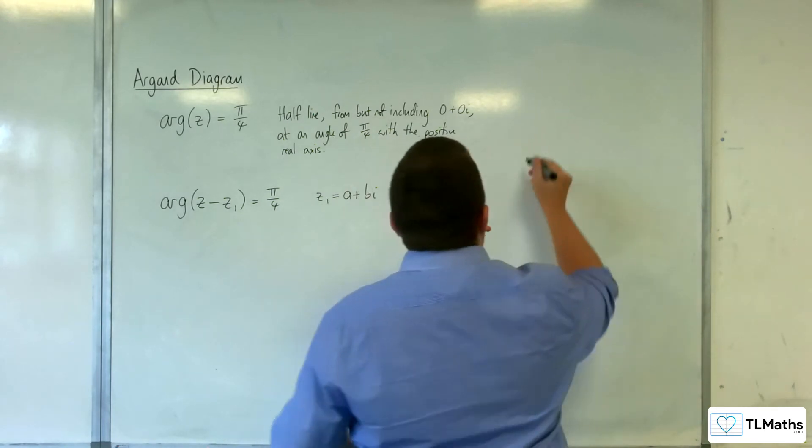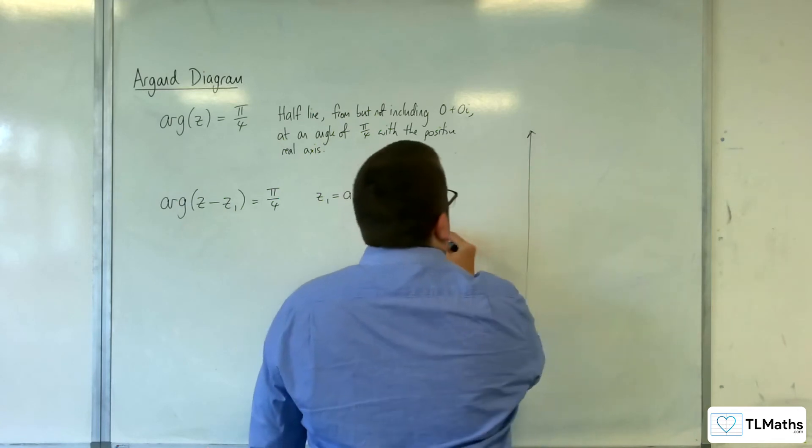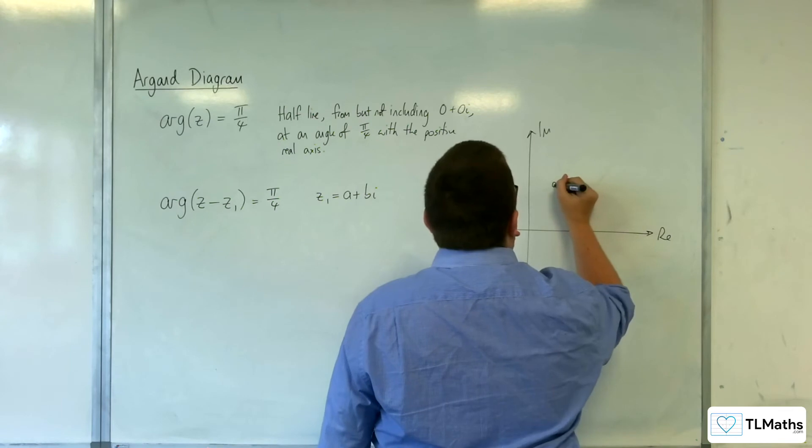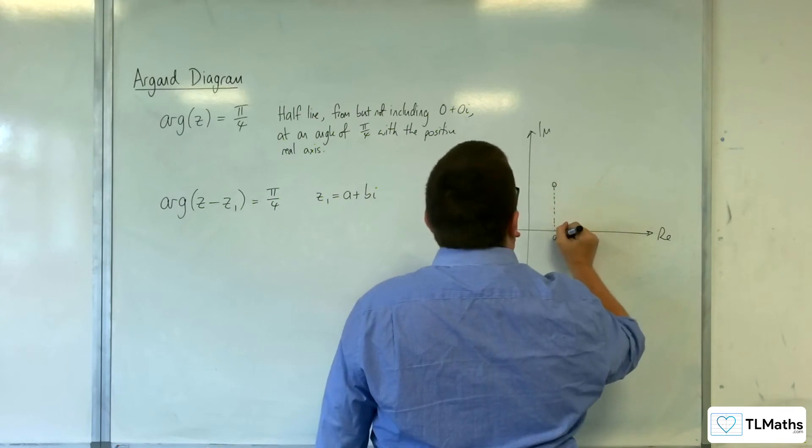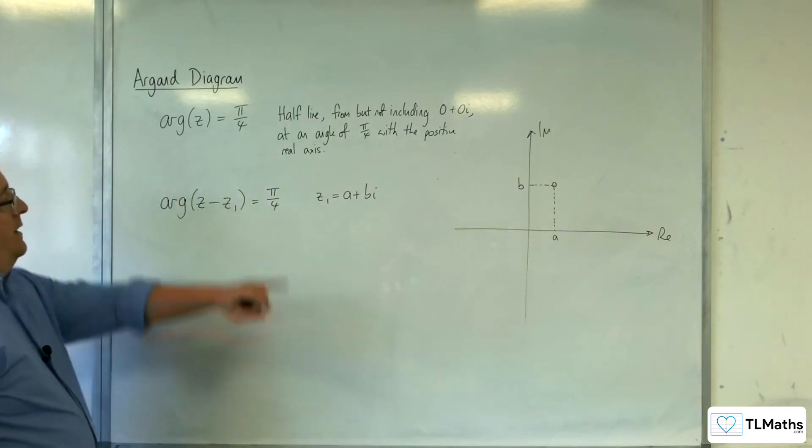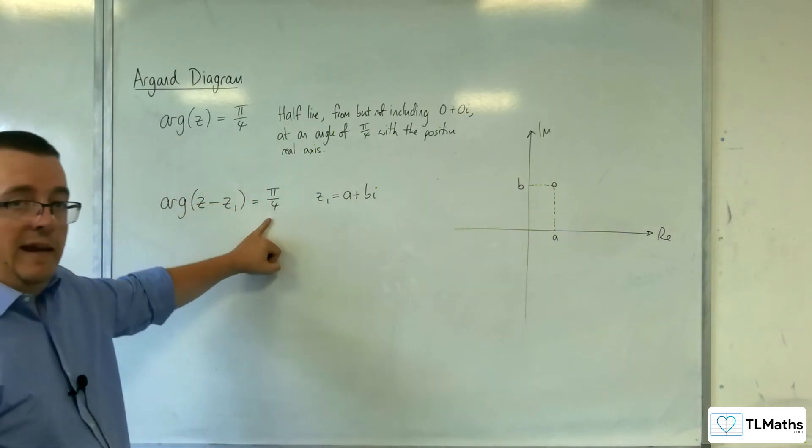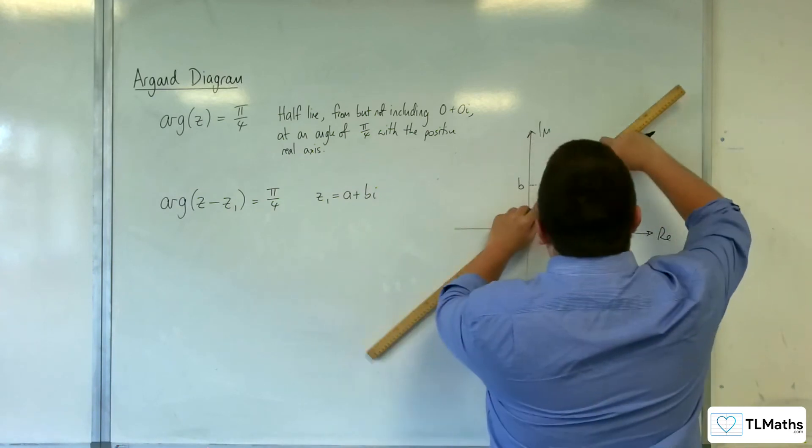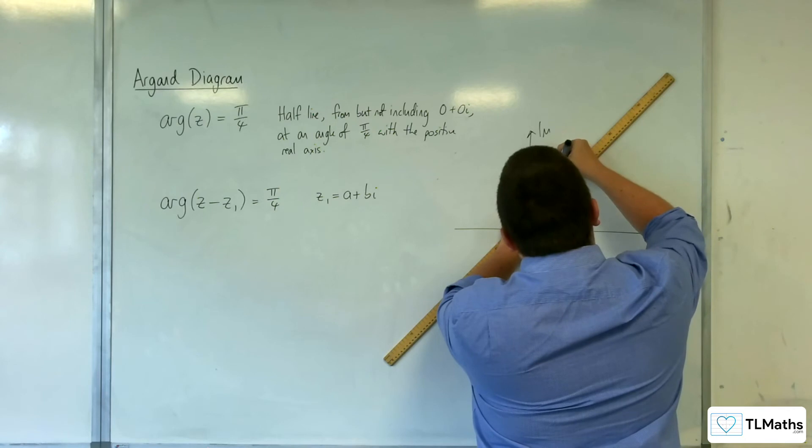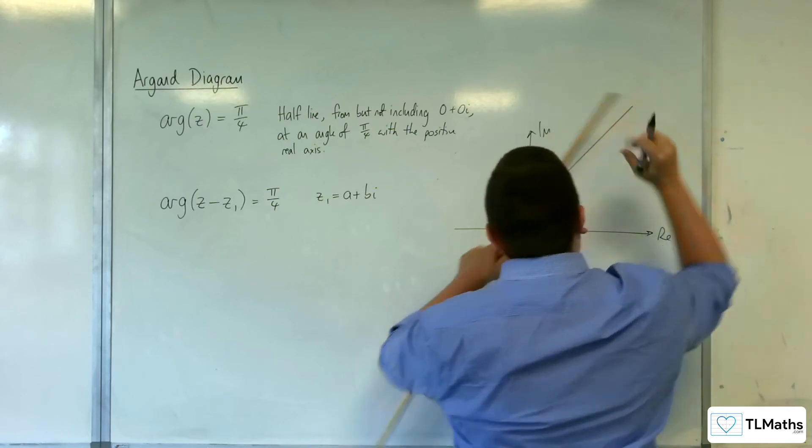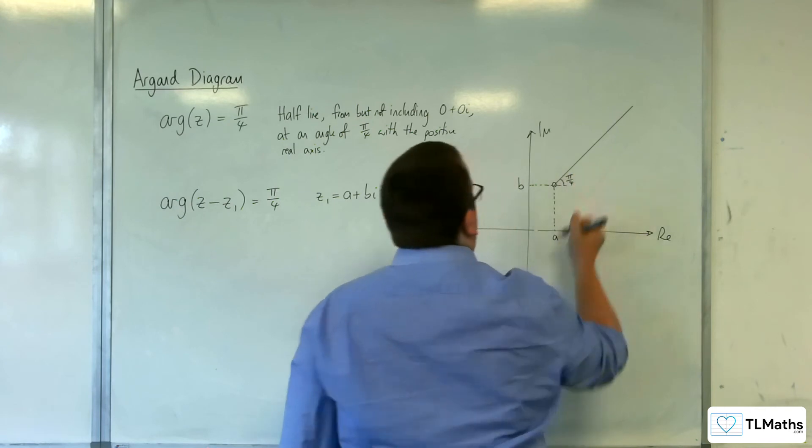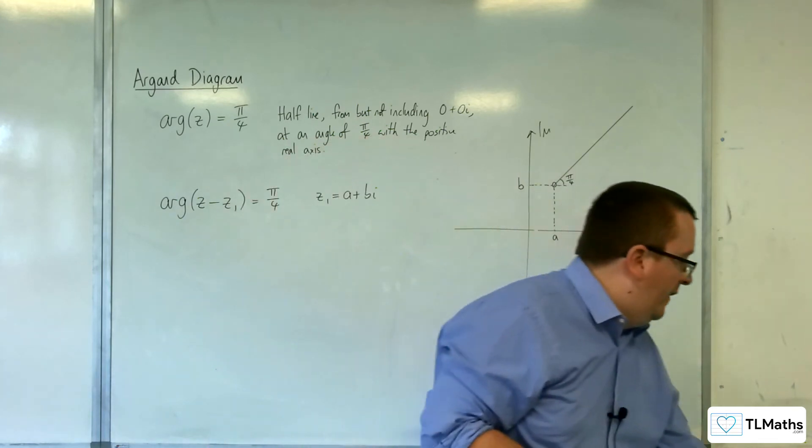Then now, on my Argand diagram, here is the point a plus bi. And it's a half line that's making the angle pi over 4 with the positive real axis. So it'll look something like this, where that angle is pi over 4. So it's just this half line.